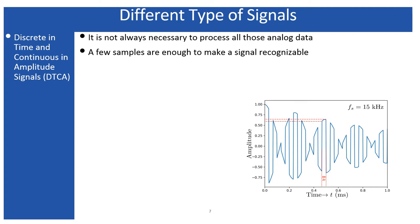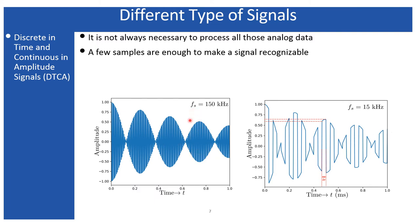The Discrete in Time and Continuous in Amplitude (DTCA) signal is that kind of signal. Discretizing the time axis means I have taken samples from the previous analog signal. Here I have represented the same signal but as a sampled version. The sampling frequency I used is 15 kHz. Similarly, you can sample at a higher frequency — here I have sampled at 150 kHz. Sampling means representing data points at discrete time intervals, and within each time interval the amplitude remains continuous.